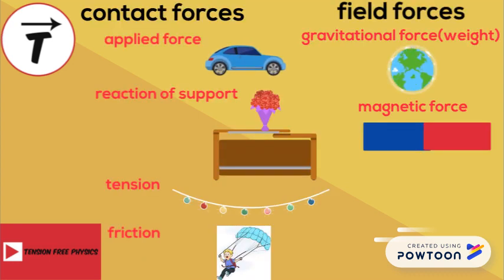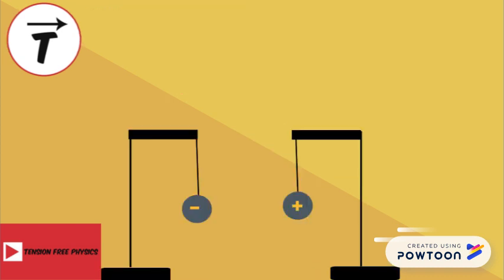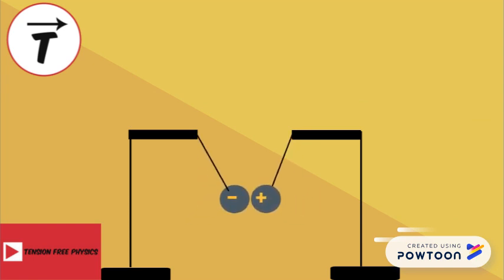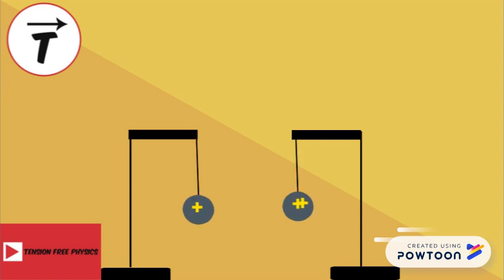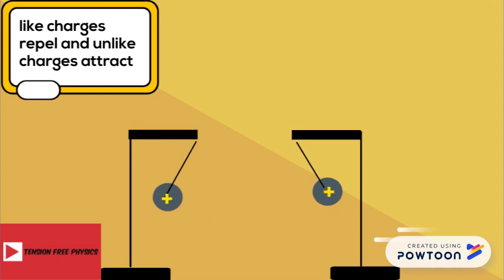Finally, let's speak about the electrostatic force that exists between charged objects. Consider one positively charged ball and another negatively charged ball. If we place them close to each other, they attract due to the electrostatic force. If both are positive, they repel due to the electrostatic force.